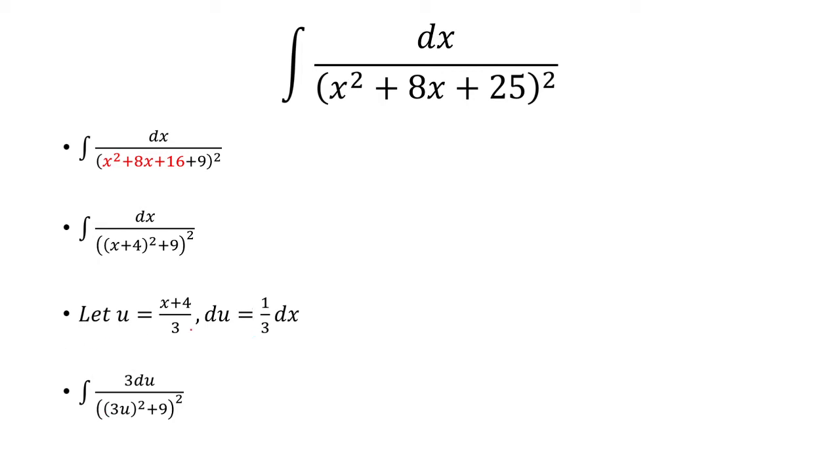Okay, so dx is just then 3 times du. And then x plus 4 will just be 3u. So we make these substitutions.